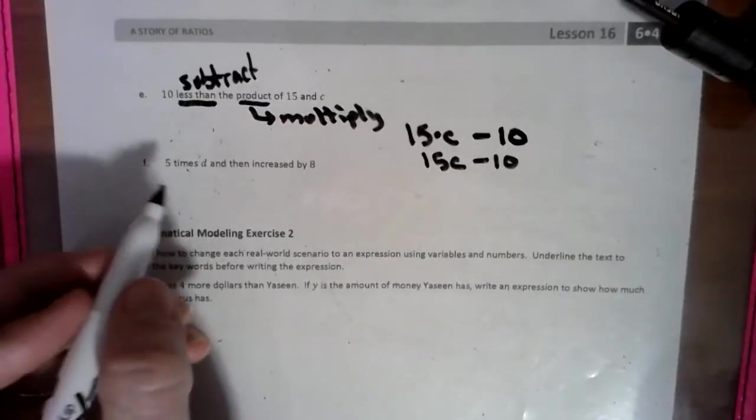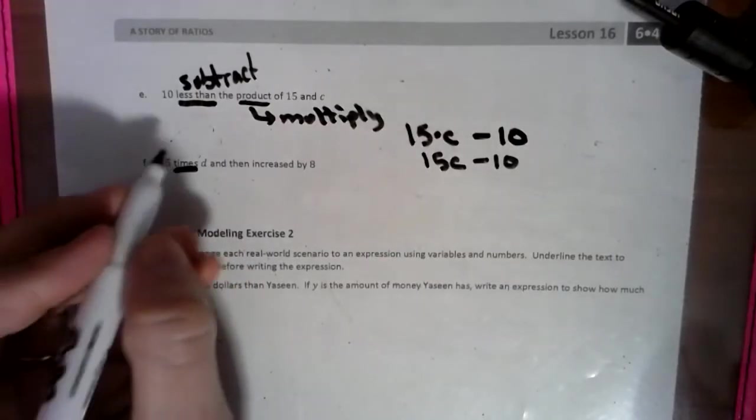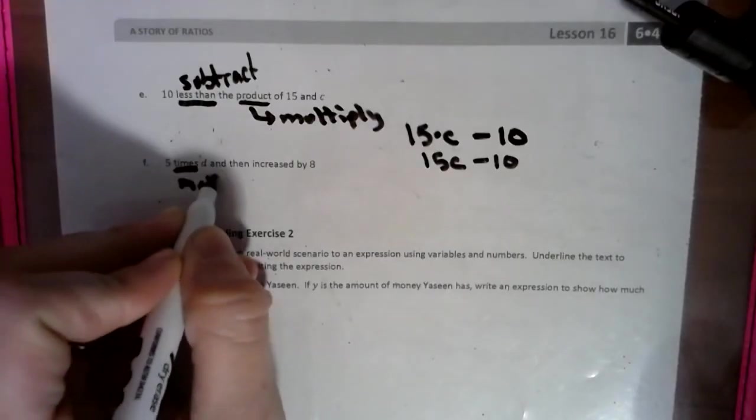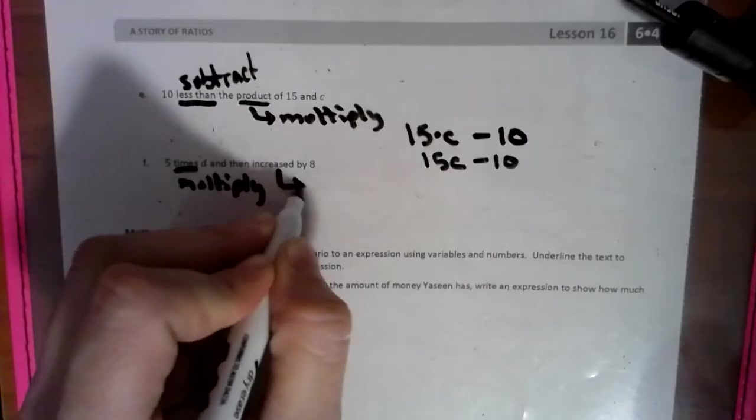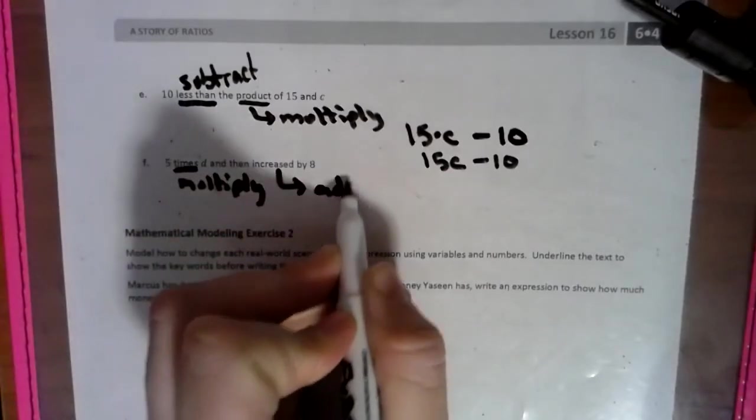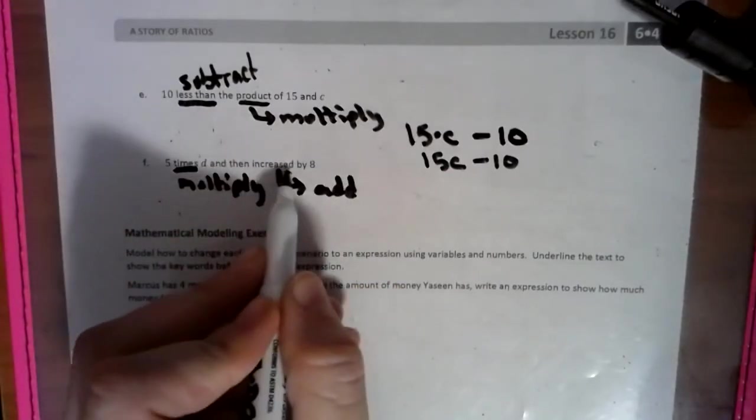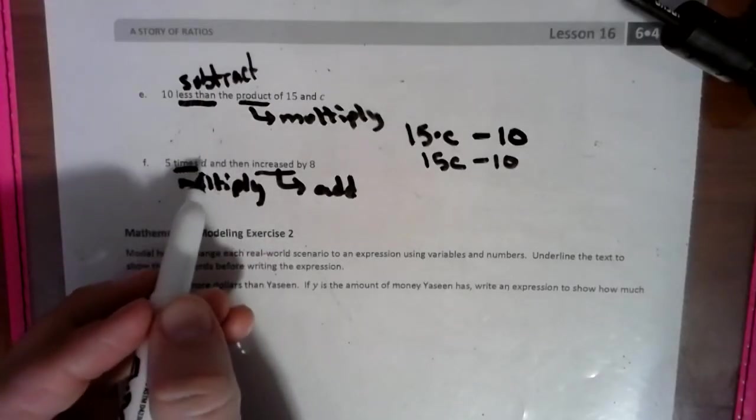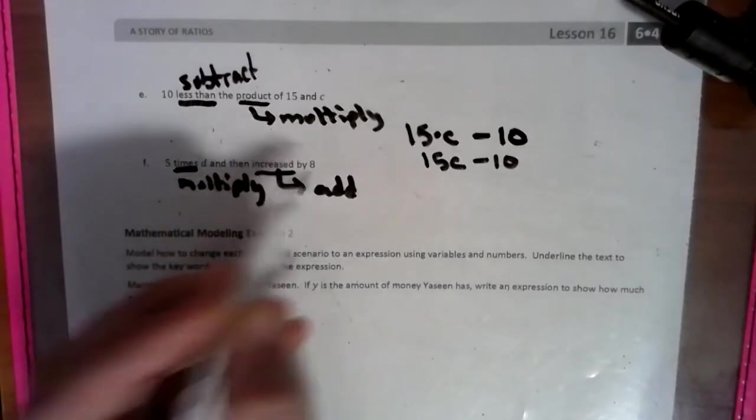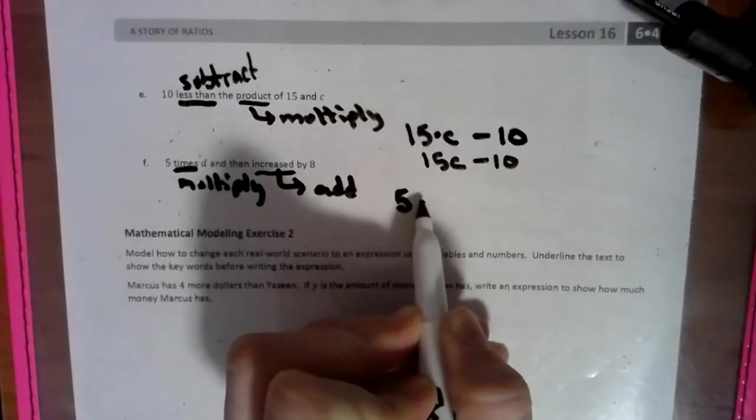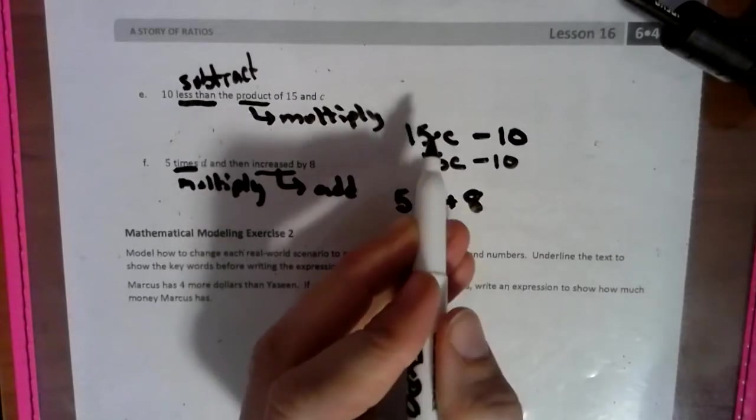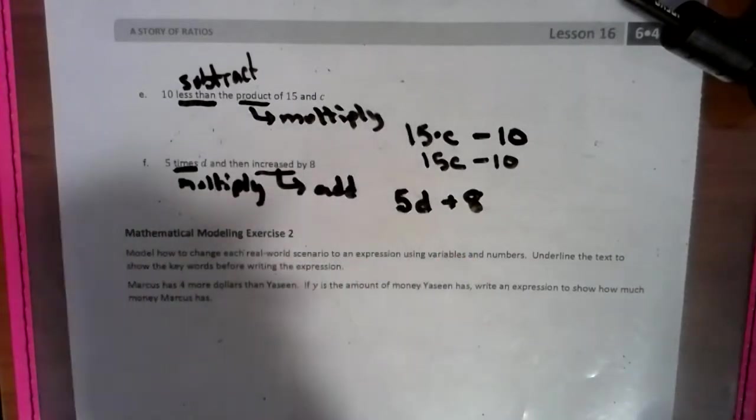Now if we look at this next one, I see the word times, which is a multiplication word. And then I see the word increase, which means to add. These are things we're going to be looking at even more in depth soon. So we have five times D and then increased by eight. We have 5D + 8, and if you want to use the dot in between those, that is totally fine.